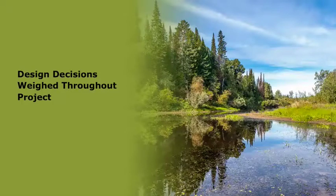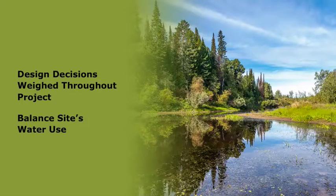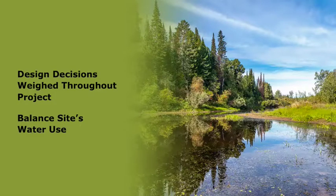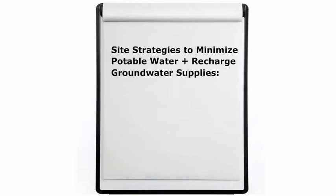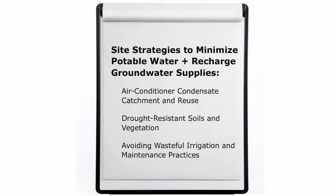Design decisions should be constantly weighed throughout the development of the project and adjustments made to balance the site's water use with the available non-potable water resources. Design strategies to minimize potable water use and recharge groundwater supplies include stormwater catchment and reuse, graywater catchment and reuse, reclaimed water reuse, air conditioner condensate catchment and reuse, drought-resistant soils and vegetation, and avoiding wasteful irrigation and maintenance practices.